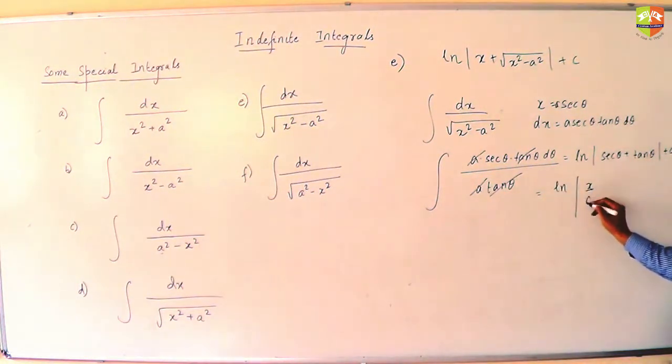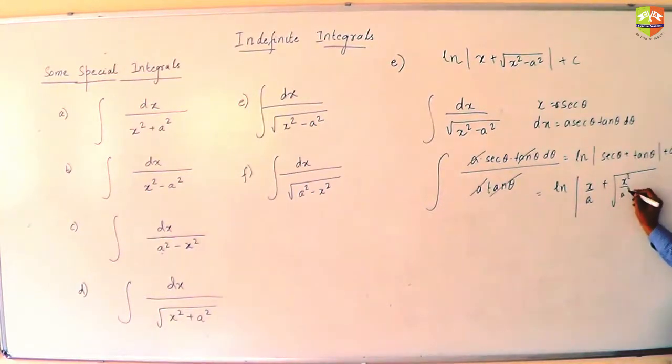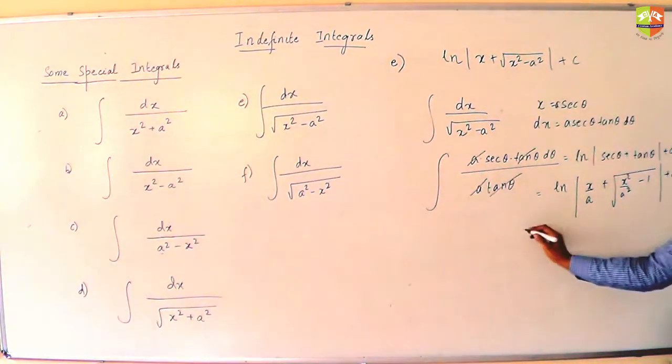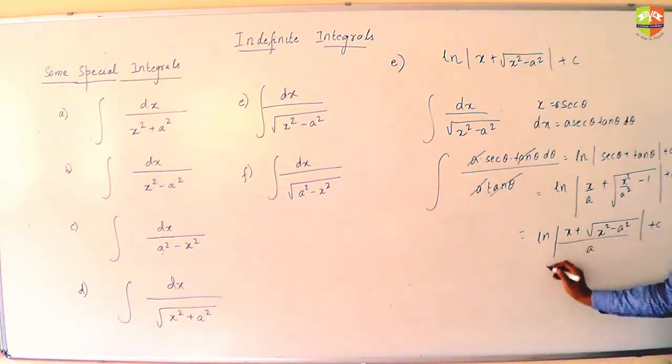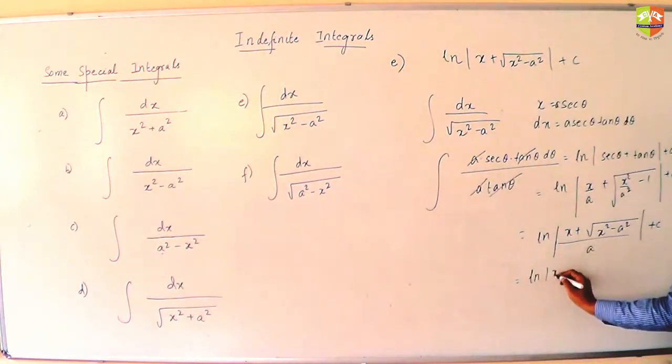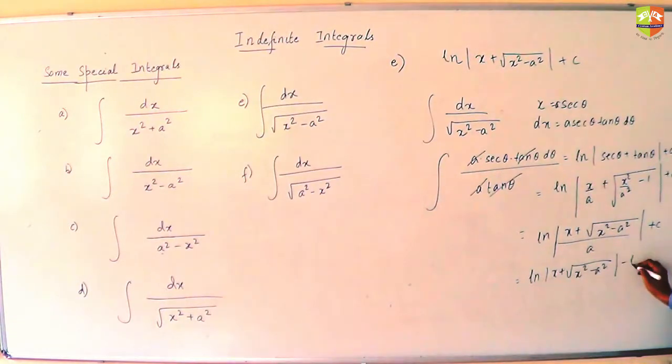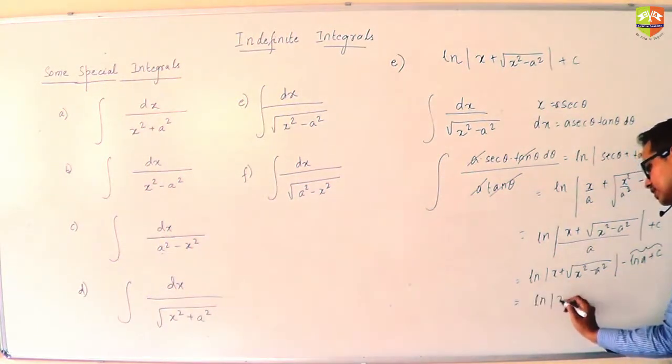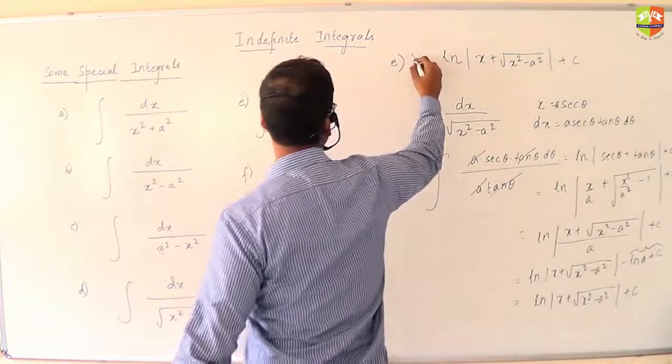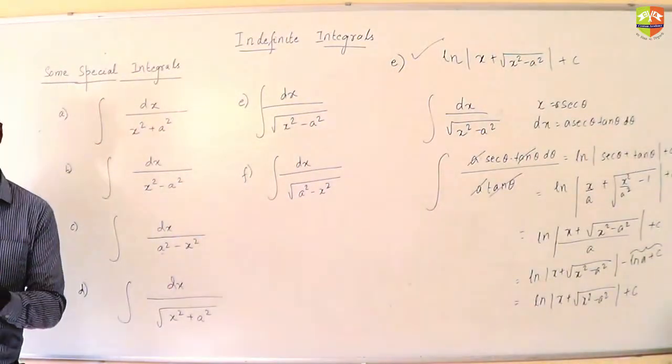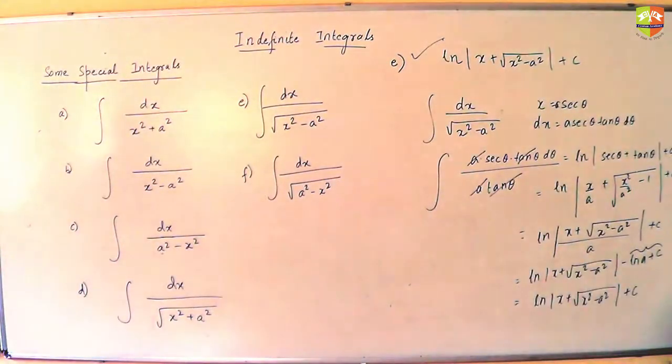This sec theta will become x by a, whereas this tan theta will become root of x by a whole squared minus 1. Which becomes ln of x plus root of x squared minus a squared by a whole plus c. By log properties, we can write it like this. And this can be combined as another constant of integration.